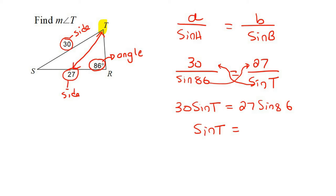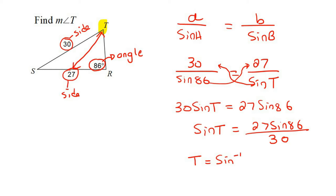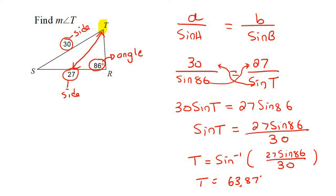To get T alone, first get sin T alone — you can divide both sides by 30. Now they didn't ask us for sin T; they asked us for T. So now we've got to do inverse sin. You know, when you push second function or shift on your calculator — everyone's calculator is different — but you're looking for the angle. So you're going to type all of that on the calculator, and that gives you 63.87 degrees.